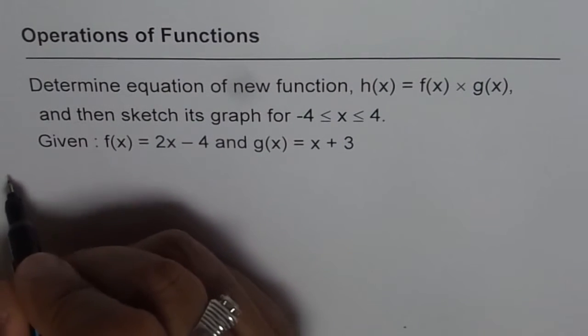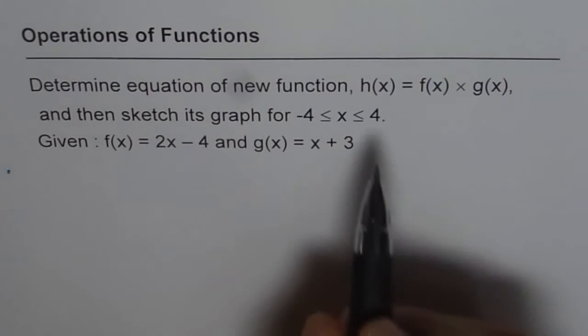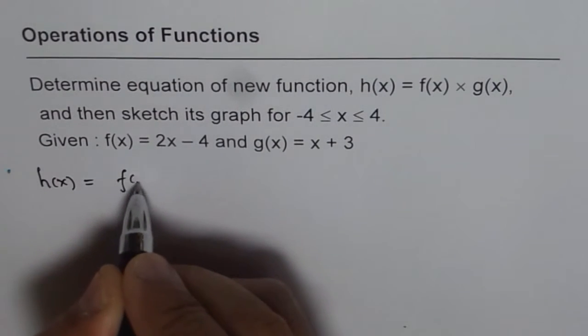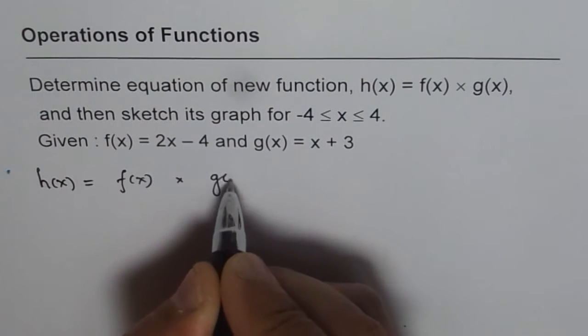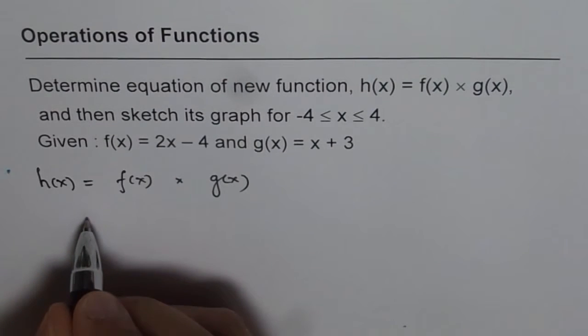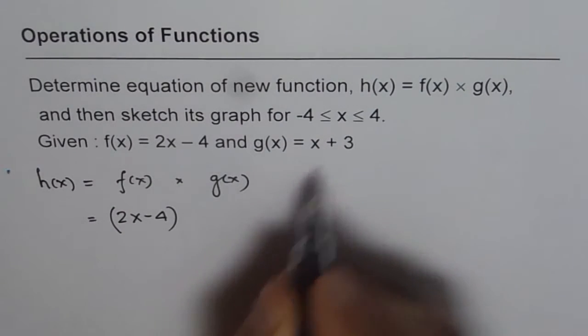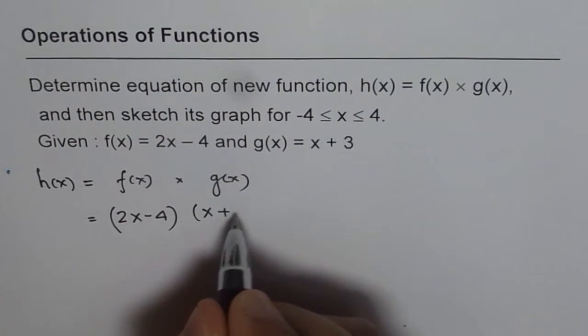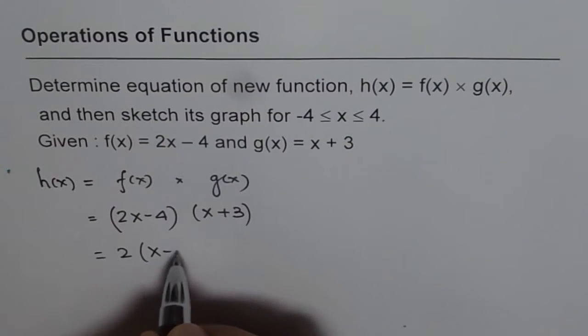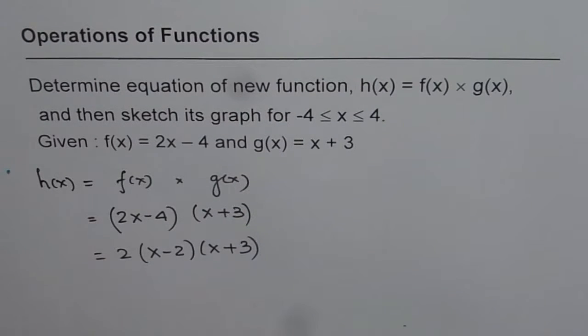Now let's do the first part which is finding equation of product of these two functions. So h(x) is given to us as equal to f(x) times g(x). f(x) is 2 times x minus 4, so we'll write here 2 times (x minus 4) times g(x) which is (x plus 3). Well we can factor 2 and then write this as 2(x minus 2)(x plus 3). So that is h(x).